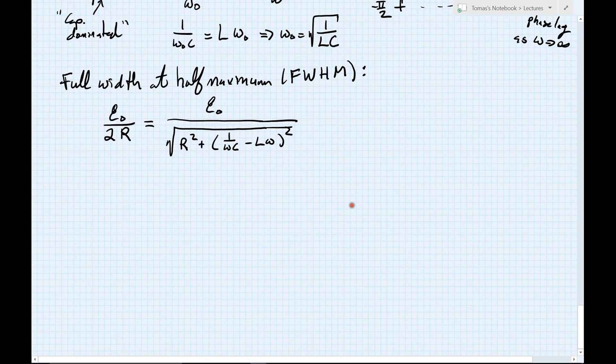Now, to solve for this equation, we want to clear the fractions. So I'm going to multiply this onto the other side of the equation, and then this term will go on to the other side on top. And then I square both sides. Notice when I do this, the e0s are going to cancel each other. And when I square this side of my equation, I just undo the square root. So I will have r squared plus this factor, 1 over omega c minus l omega squared. And that then has to equal, when I square this side of the equation, 4r squared.